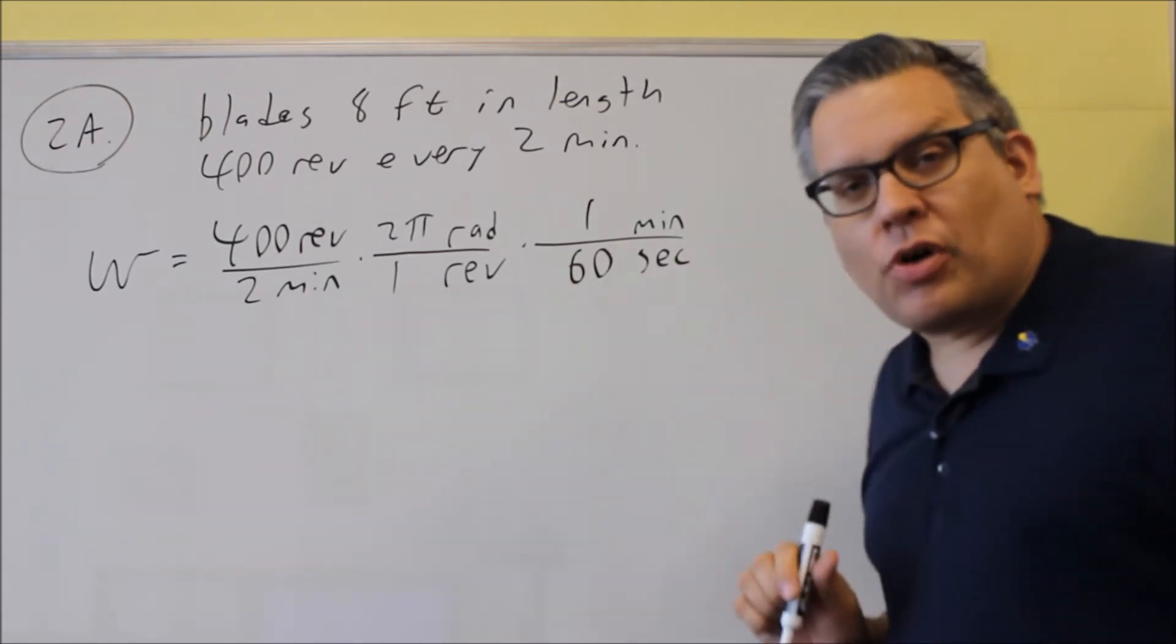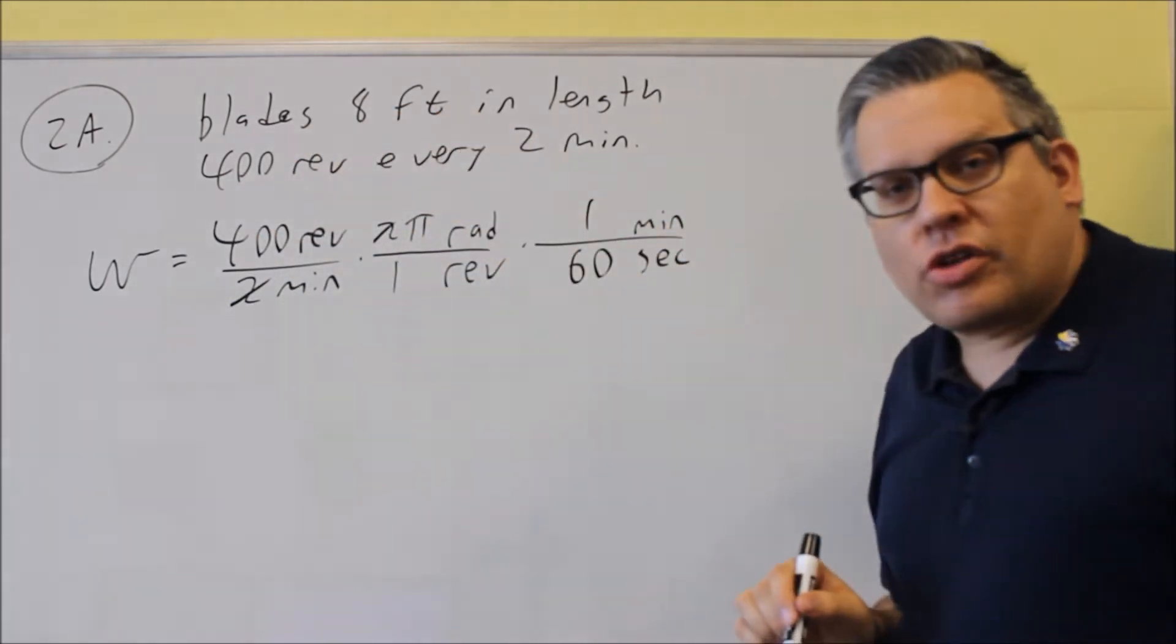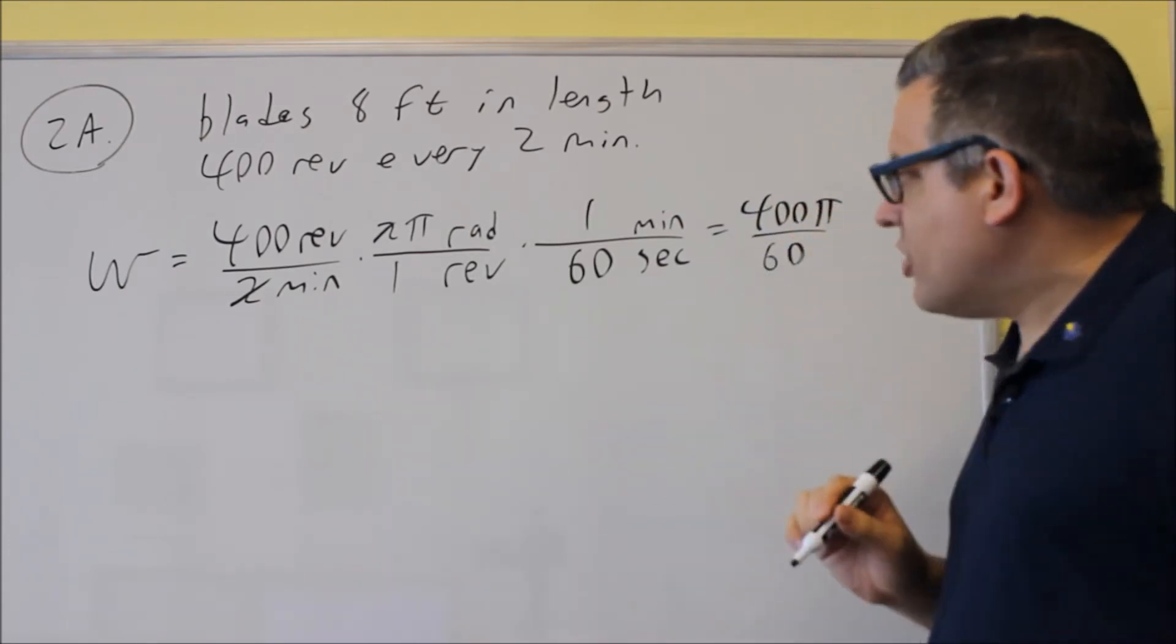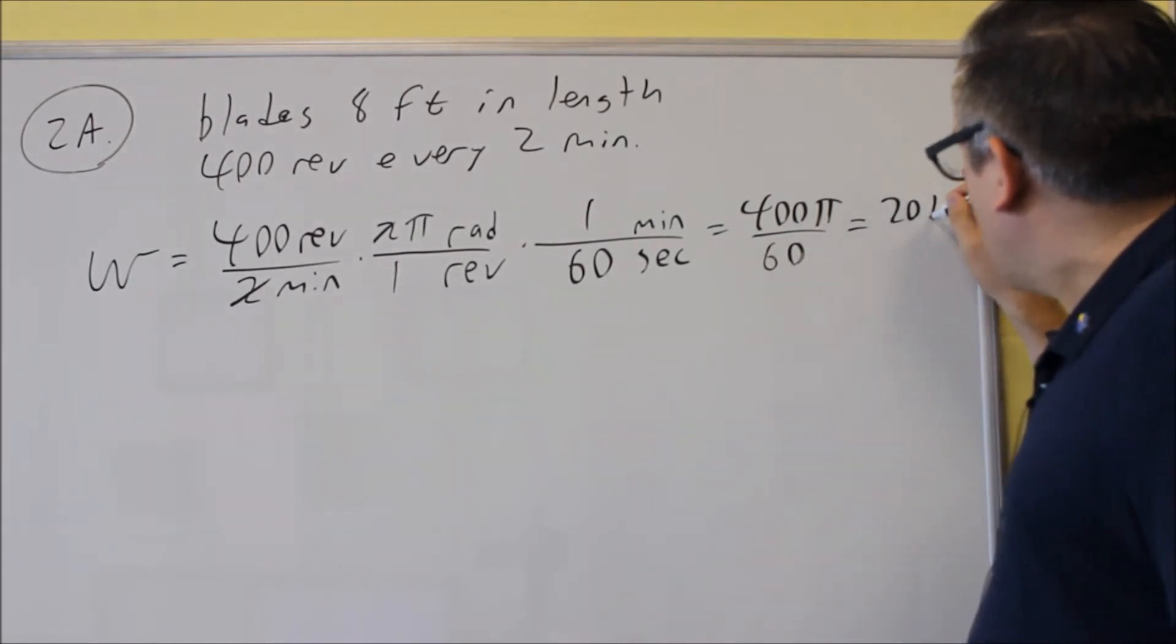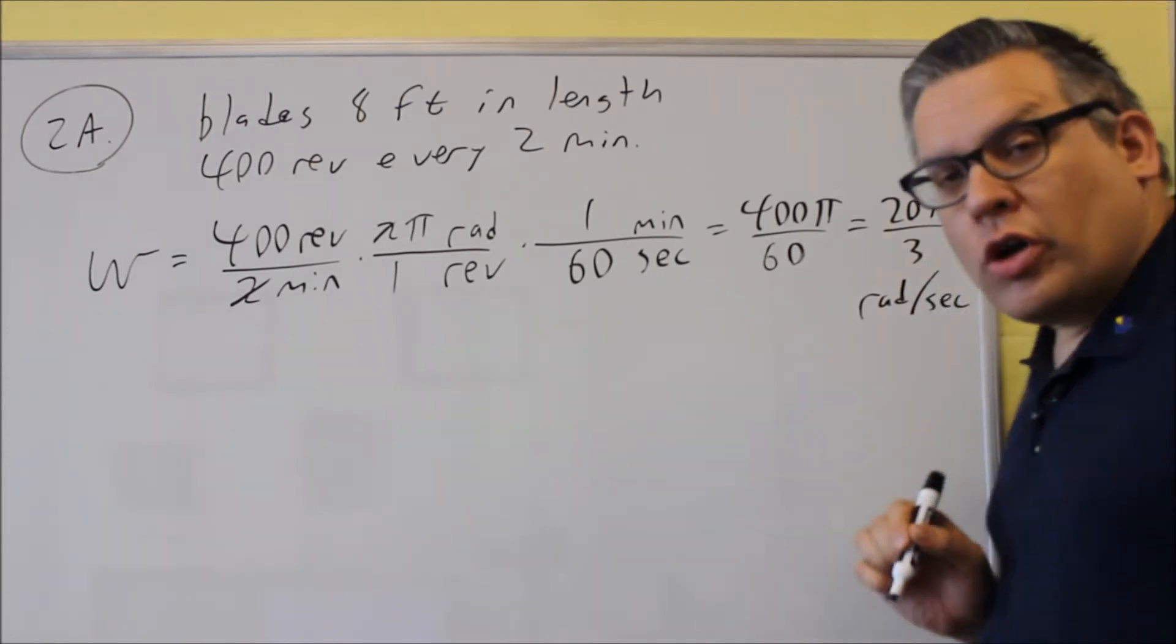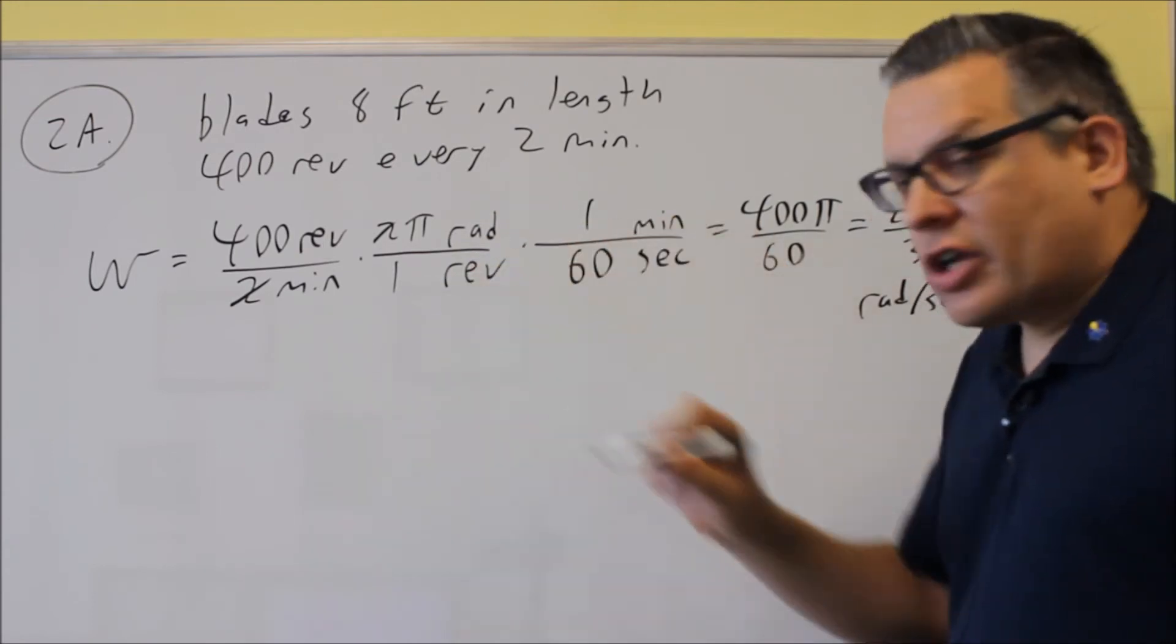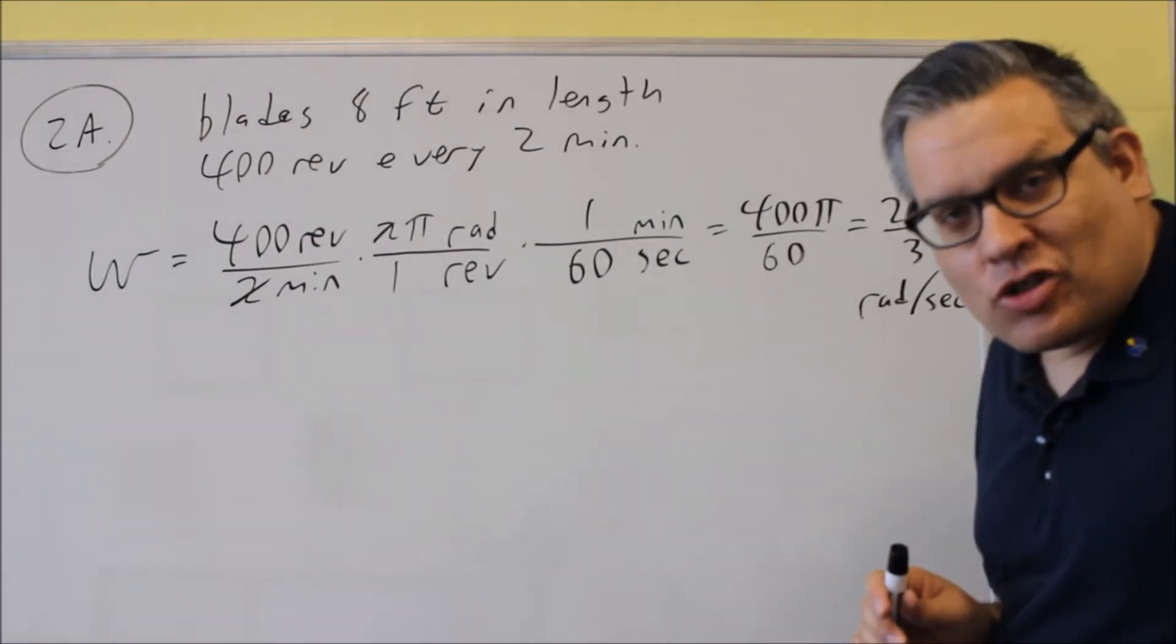And now I just need to multiply all this out and reduce the fraction. One thing I do see here is these twos are going to cancel out. And we're going to get 400π over 60. But then that reduces if we divide both of those by 20 we'll get 20π over 3. The units on that would be radians per second because everything else cancels out. Revolutions cancel and the minutes are cancelling out as well. So that's the first answer that would be for the angular speed.